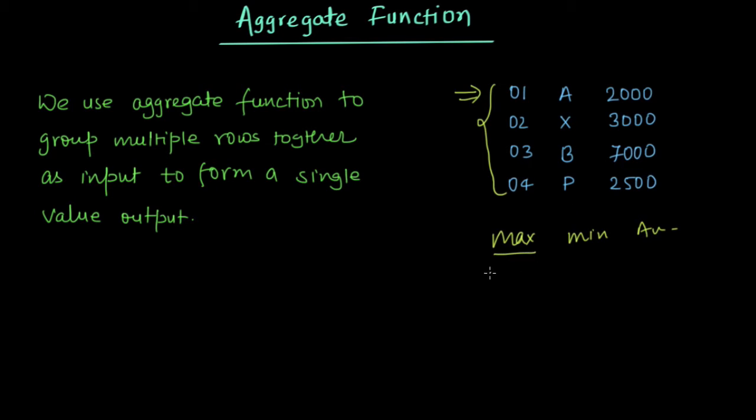That is when we ask maximum, it should print 7000, something like this. Similarly, we can ask for average, we can ask for minimum. So these are the use of aggregate function.